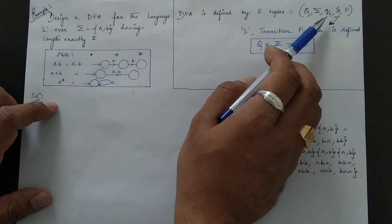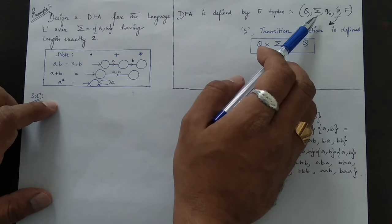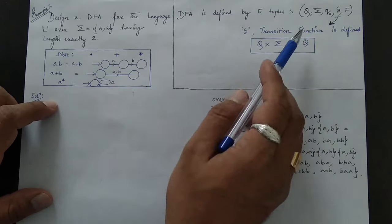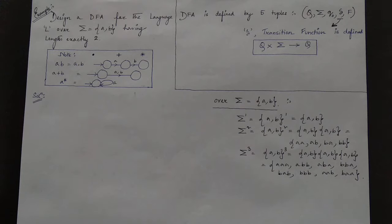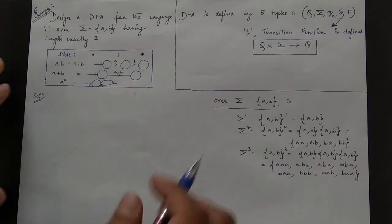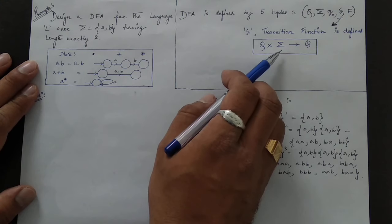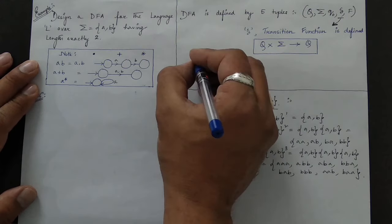Q-naught is the initial state and F is the final state. Sigma is the total number of input alphabets. The transition function delta explains the different types of possible transitions for a particular set of inputs. It is denoted by two parameters: the number of states and the number of input alphabets, indicating movement to another state.